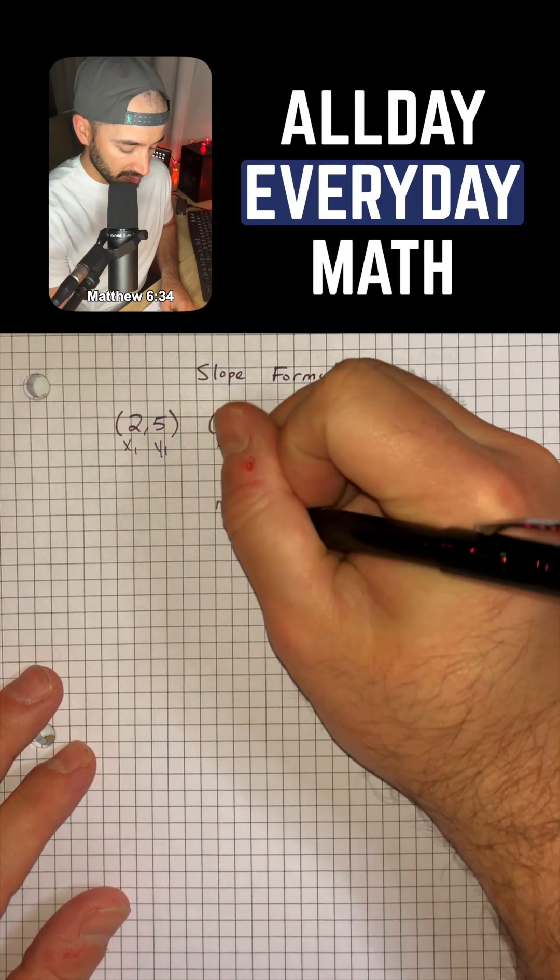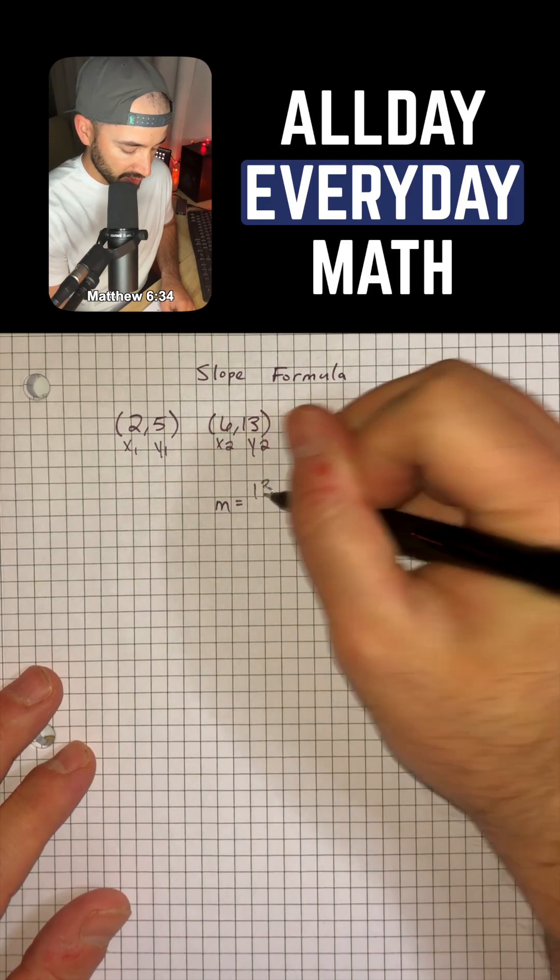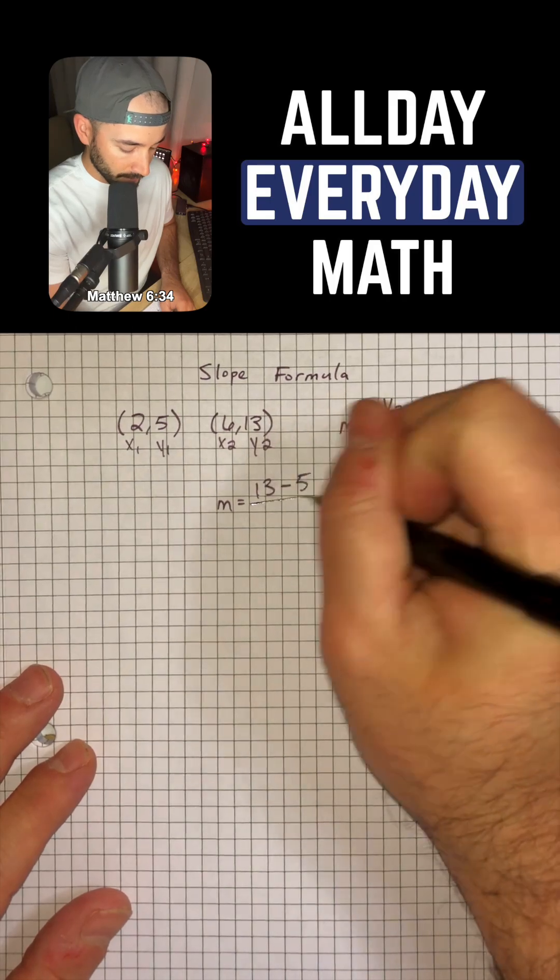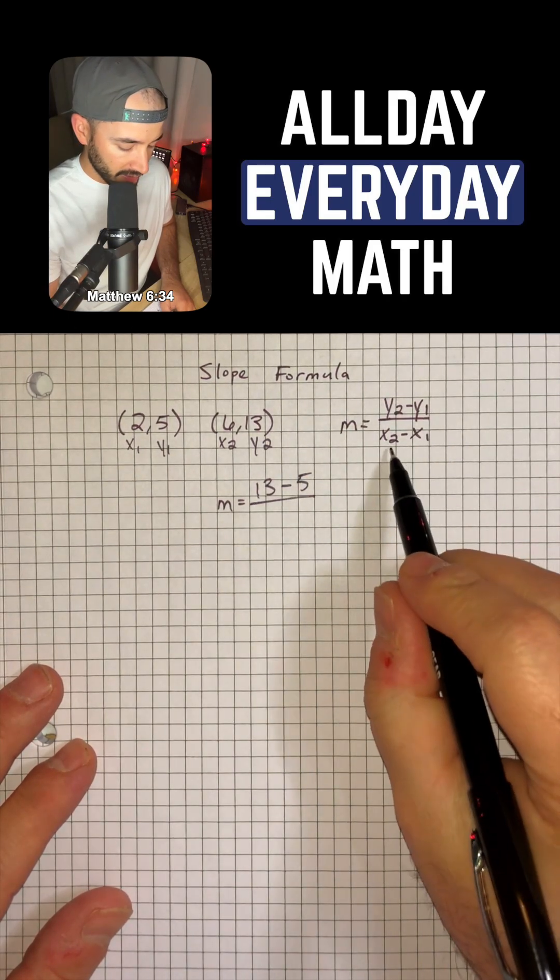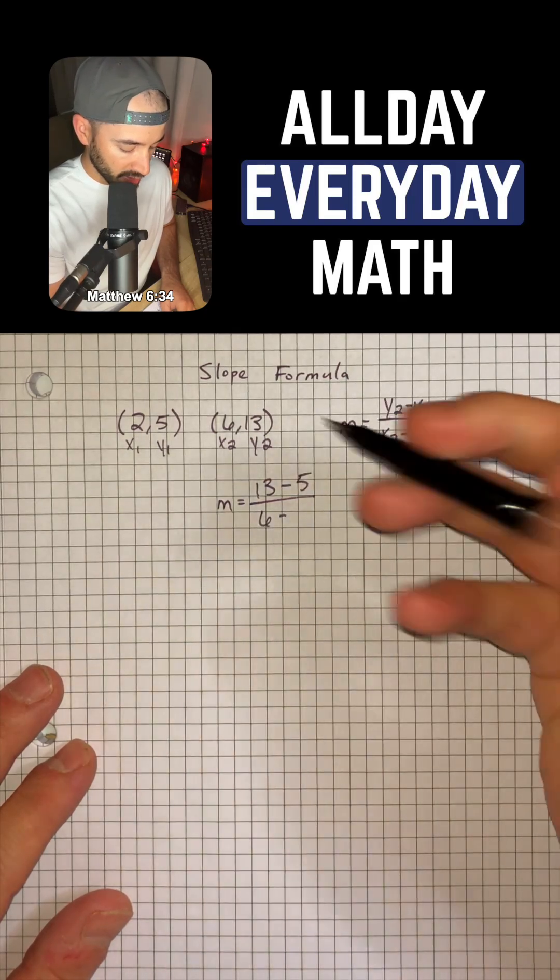So our slope is going to be equal to y2, which is 13, minus y1, which is 5, over or divided by x2, which is 6, minus x1, which is 2.